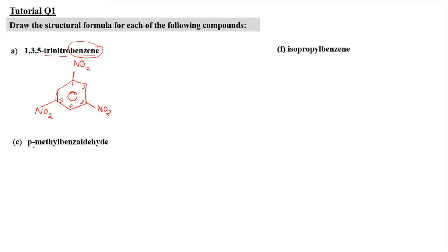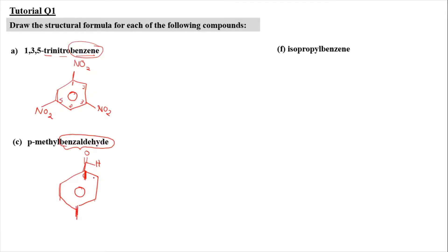Now we're going to do question C, which is P-methylbenzaldehyde. Benzaldehyde is a special name for benzene, meaning that the benzene is attached with an aldehyde group. So we draw a benzene ring, and the aldehyde group consists of a carbon double-bonded to oxygen and attached to a hydrogen. The carbon attached to this functional group is carbon number 1.